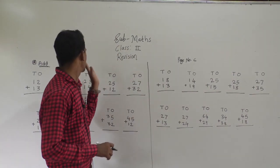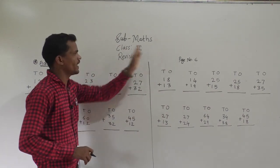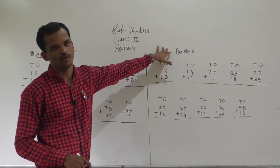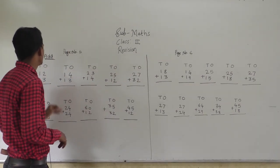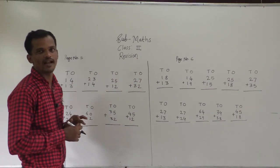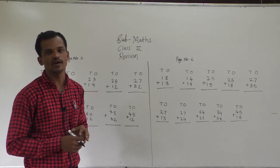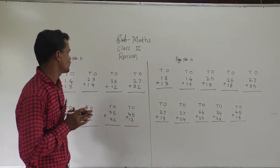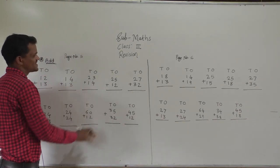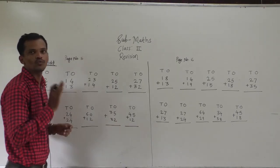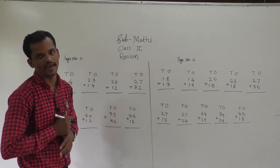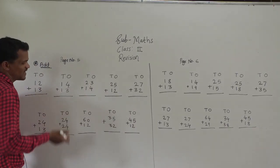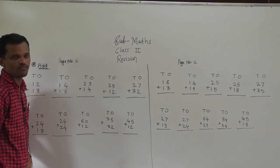Today we will solve page number 5 and 6 of the math revision paper. Page number 5 instruction is there — add means we have to do the addition operation. The examples here are without carry forward.